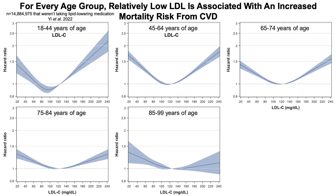For every age group, relatively low LDL is associated with an increased mortality risk from cardiovascular disease. This is data from a study of about 14.9 million people that weren't taking lipid-lowering medication. For every age group, starting with 18-year-olds all the way up to 99-year-olds, we can see that LDL in the 100 to about 120 mg per deciliter range is associated with the lowest risk for cardiovascular disease-related mortality. However, with lower LDL, as shown by the red arrows, we can see increased mortality risk from CVD.